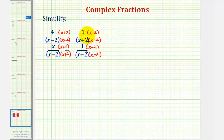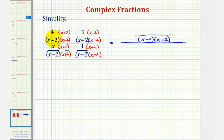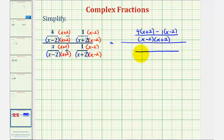Now that we have common denominators, we can find the difference on top and the sum on the bottom. The common denominator on top is the quantity x minus two times the quantity x plus two. We can combine the numerators, which would be four times the quantity x plus two, minus one times the quantity x minus two. Looking at the bottom, the common denominator is x minus two times x plus two, and we combine the numerators: x times the quantity x plus two, plus one times the quantity x minus two.